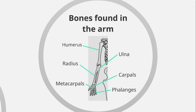We then have the carpals — small bones situated just after the radius and ulna at the wrist. These lead onto slightly bigger bones, the metacarpals, before leading onto the fingers, which are known as phalanges. So in this section we have: the humerus, the ulna, the radius, carpals, metacarpals, and phalanges.